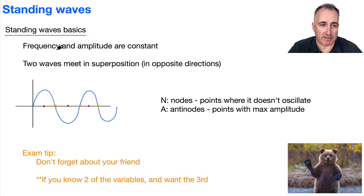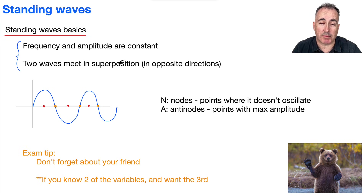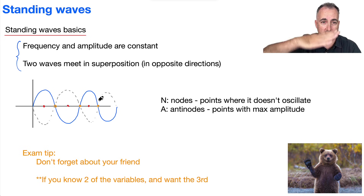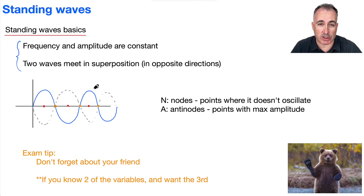The point of standing waves is this: we have a condition where the frequency and amplitude are constant, and we're going to have two different waves meeting in superposition — going in opposite directions. I want you to imagine that this wave isn't just static; it's changing. This piece right here is going up and down and up and down, and this piece here is going down and up and down and up. This is a moving, dynamic thing.